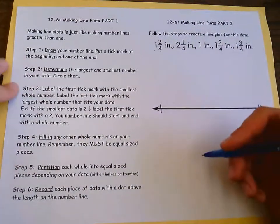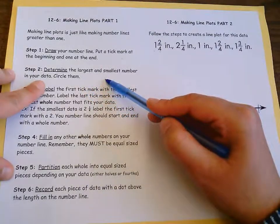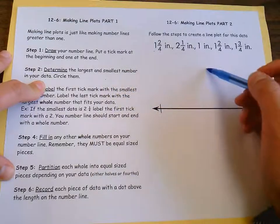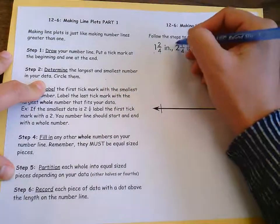So determine the largest and the smallest numbers in your data. So I'm looking here and I see I've got one is the smallest and two and a fourth is my largest.